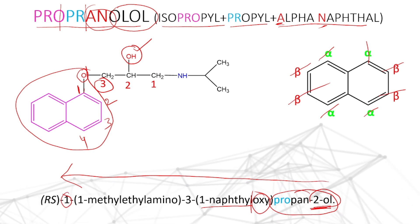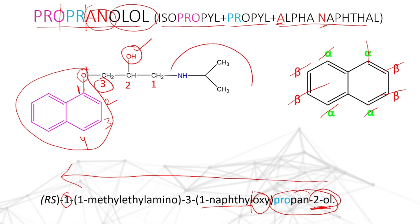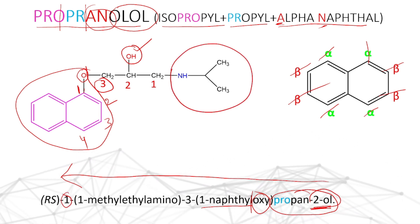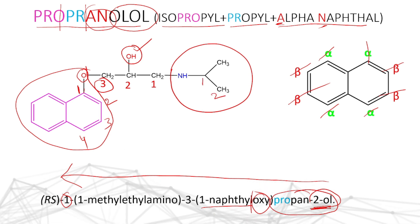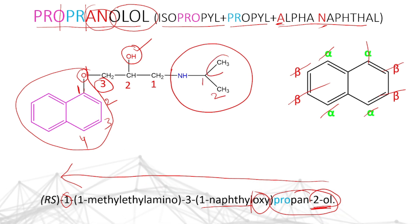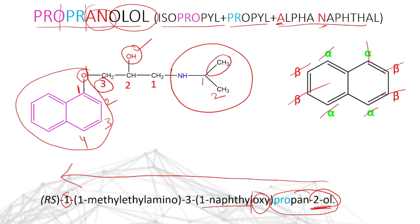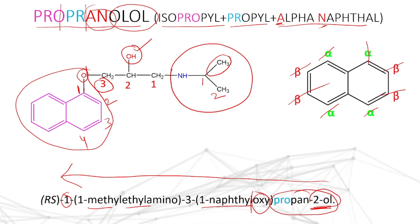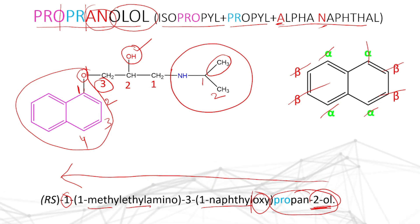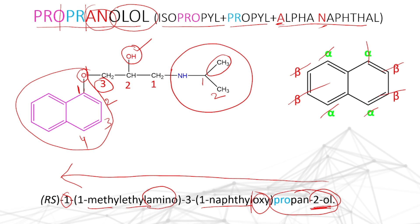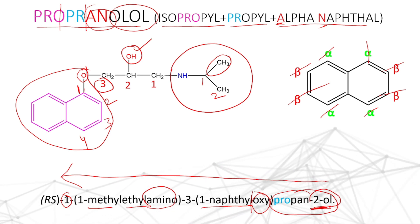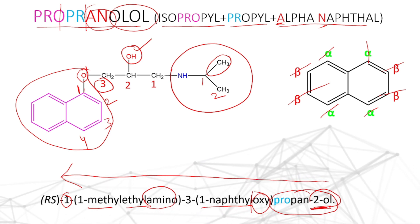At the one position, this substituent is there. The name of that substituent — positions one, two — the first position is containing a methyl group, hence we are writing it as one-methyl ethyl, a two carbon containing amino group. So this is propranolol — its IUPAC name, structure, and generic name.